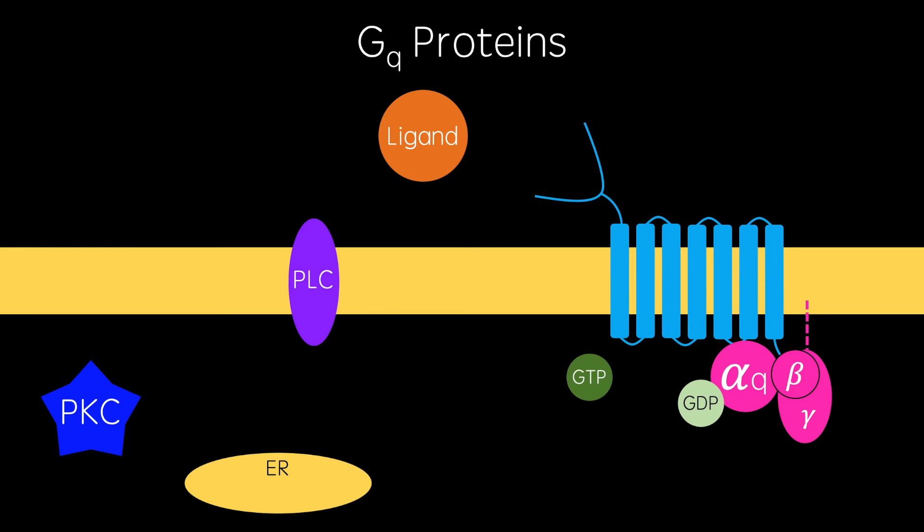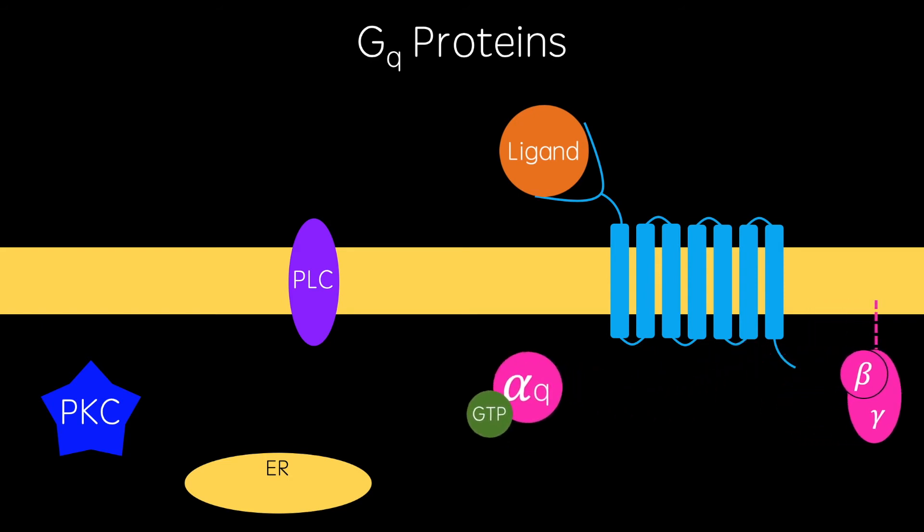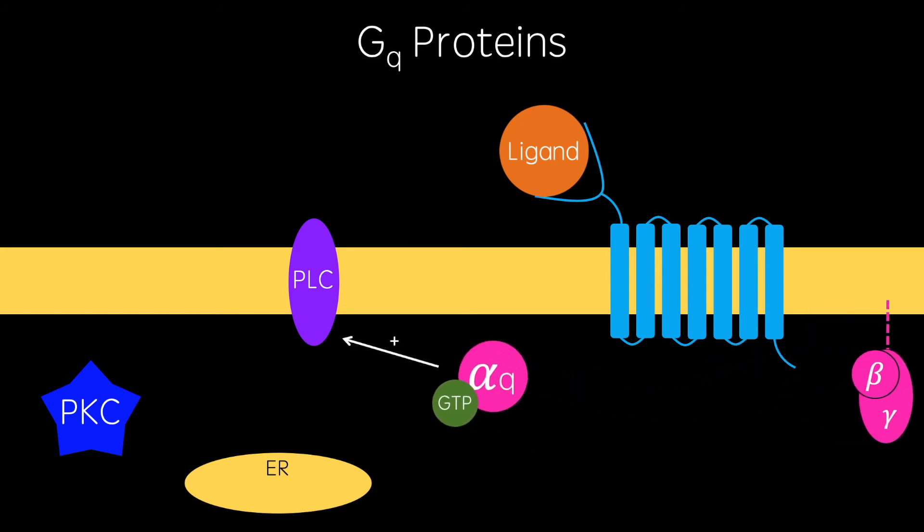GQ coupled receptors activate phospholipase C. This enzyme converts PIP2 to IP3 and diacylglycerol. This IP3 causes calcium to enter the cytoplasm from the endoplasmic reticulum.